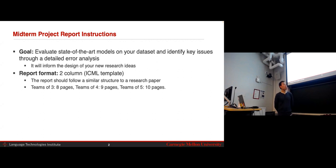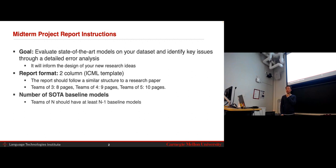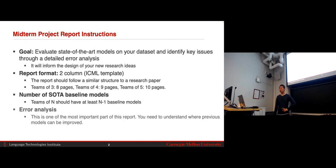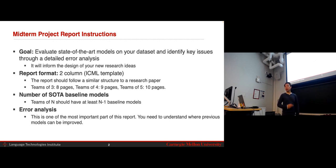Several main things to consider. The report should be about 8 to 10 pages, depending on how many people are on your team. The goal is to benchmark a number of baseline state-of-the-art models — team members should be benchmarking N-1 models. Most importantly, after you benchmark these models and run them on your datasets, you should come up with error analysis. Find out what exactly the model is failing at, and therefore come up with new directions of work based on those errors.